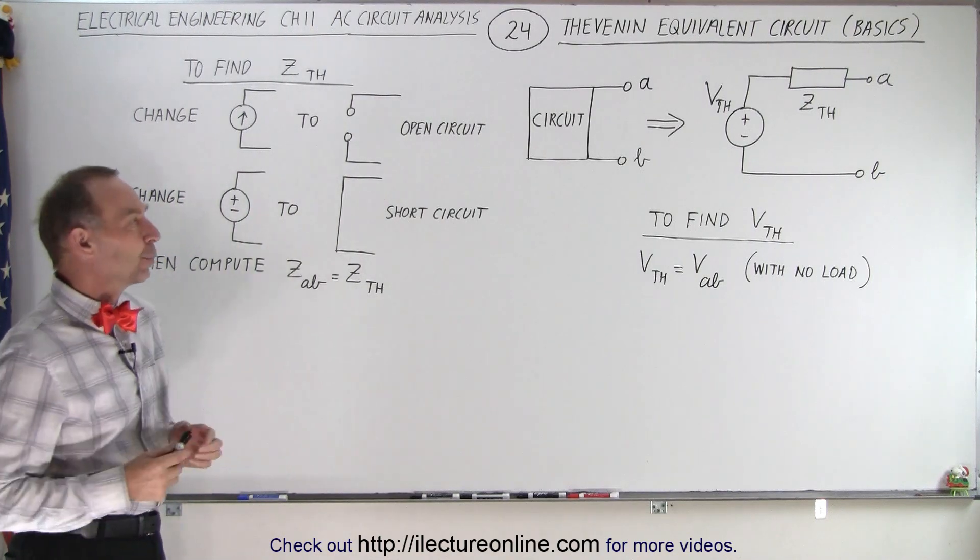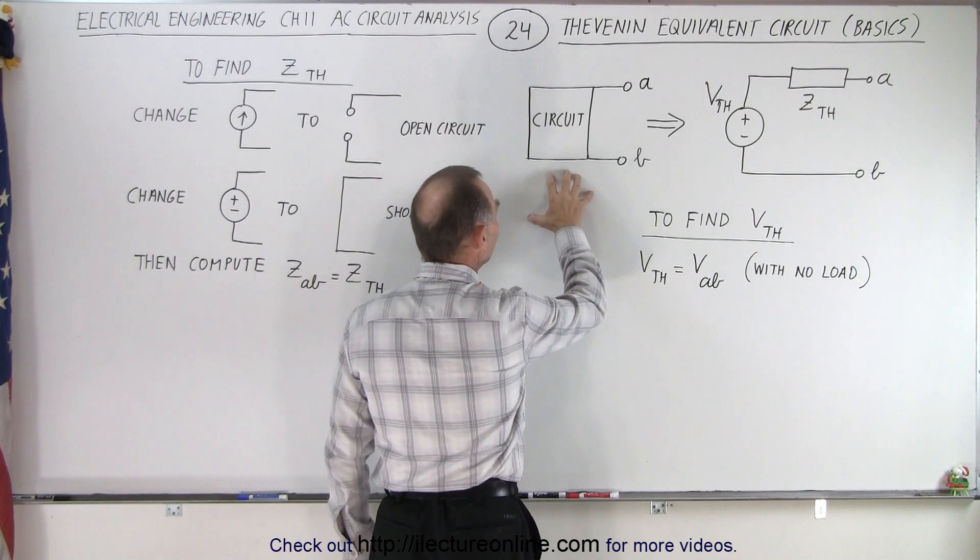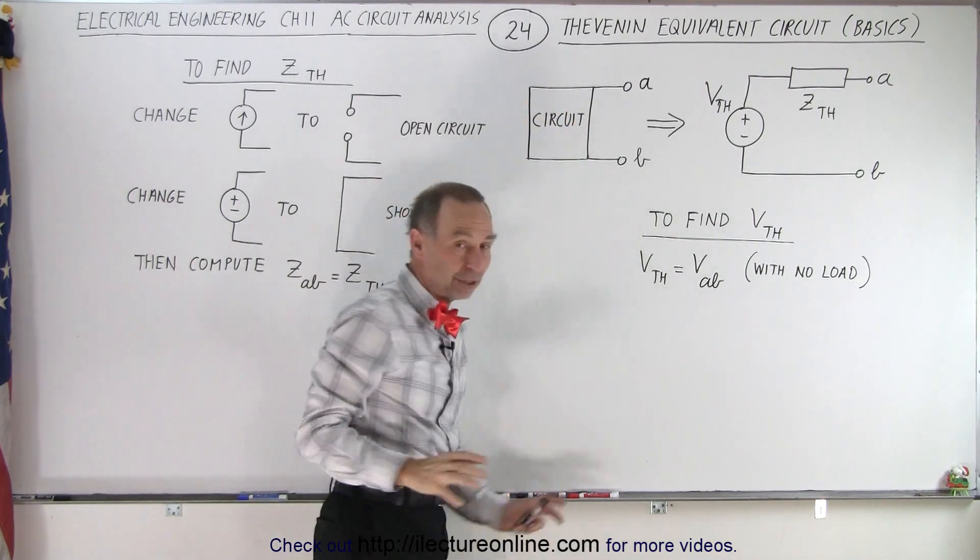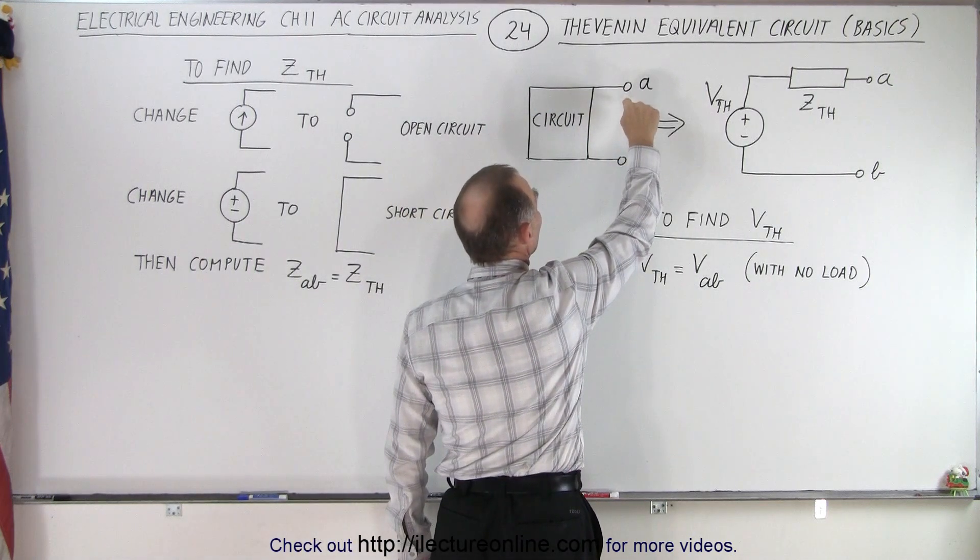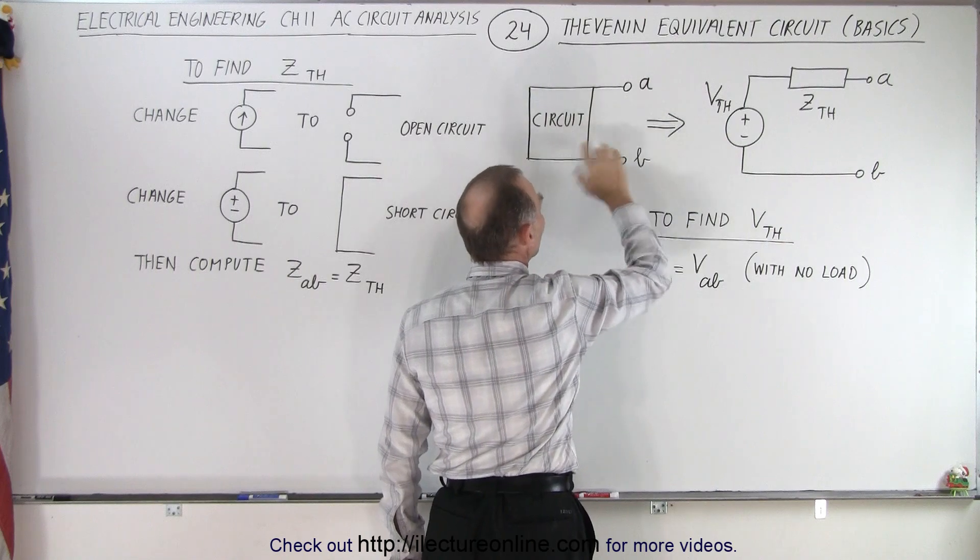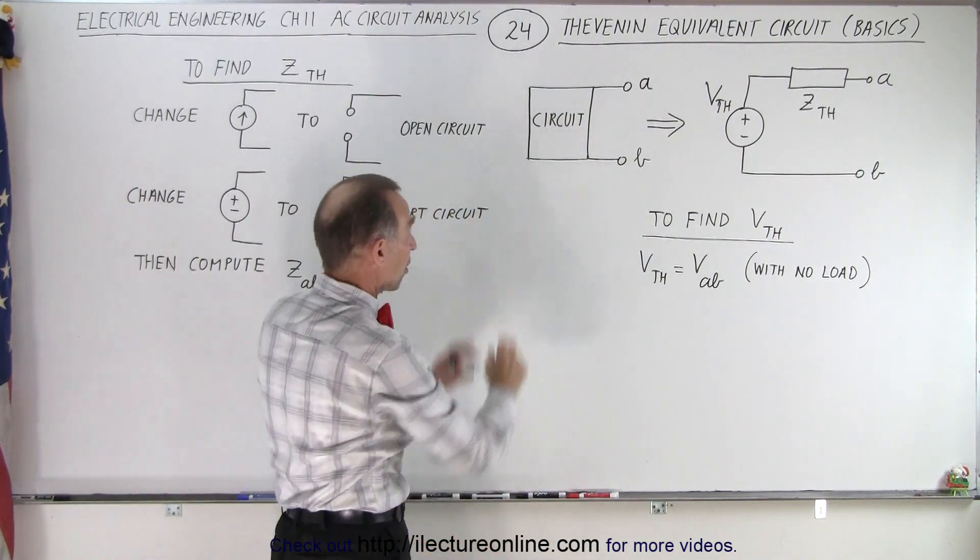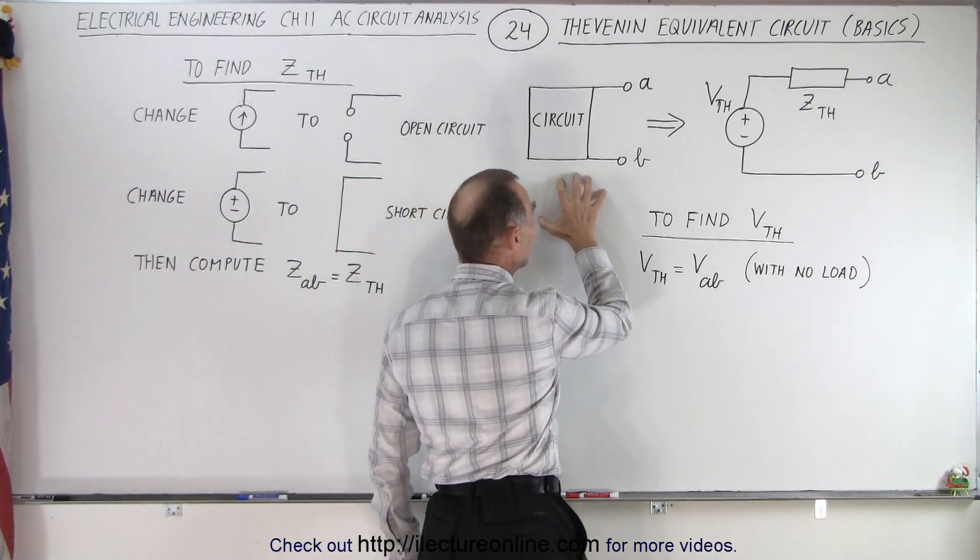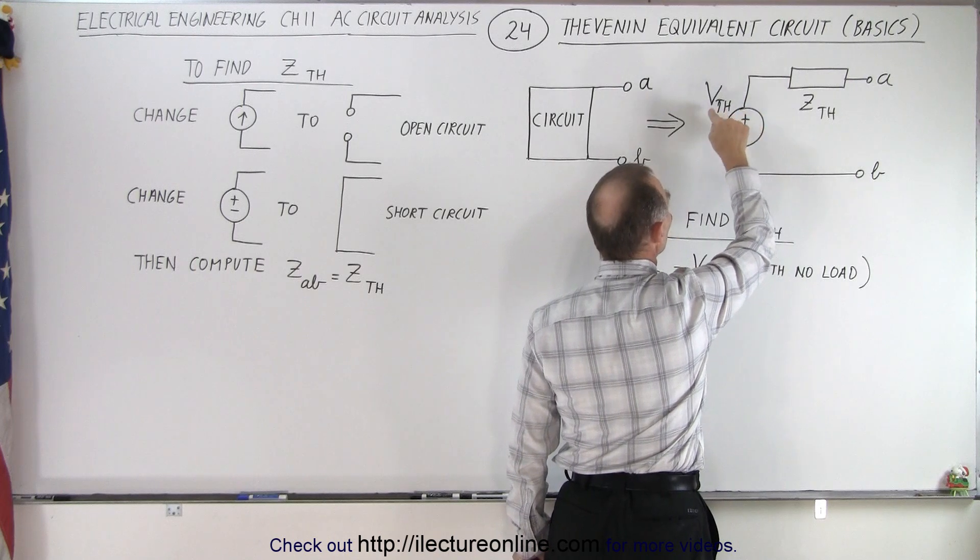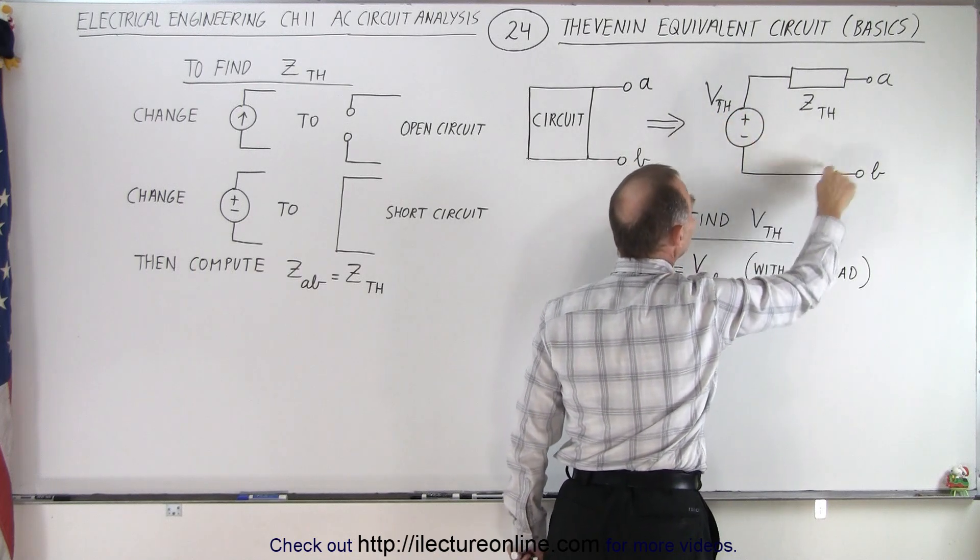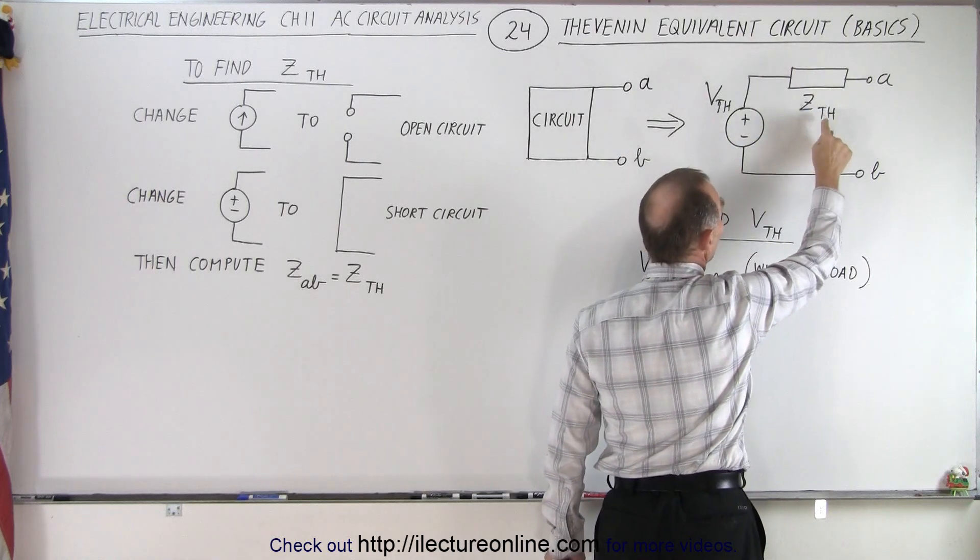So how do we do that? Well essentially what you want to do is take your circuit, and obviously you can have a whole complicated mess in here but it doesn't matter. What you want to do is find something about what happens between the terminals A and B, wherever they may be inside the circuit. You want to convert this into a voltage source where the voltage is known as the Thevenin voltage and an impedance in series with that voltage source where the impedance is known as the Thevenin impedance.